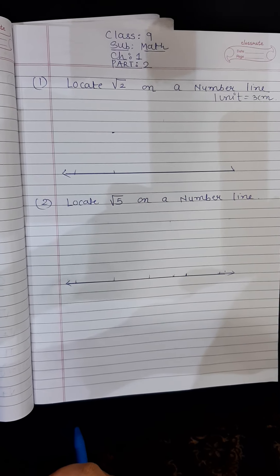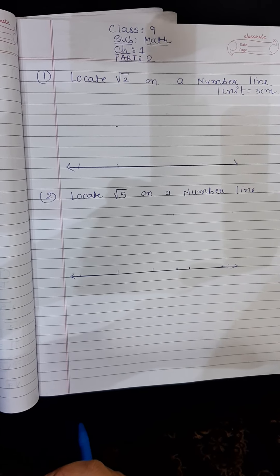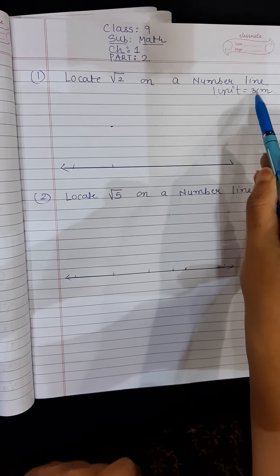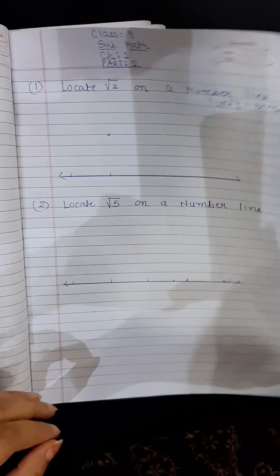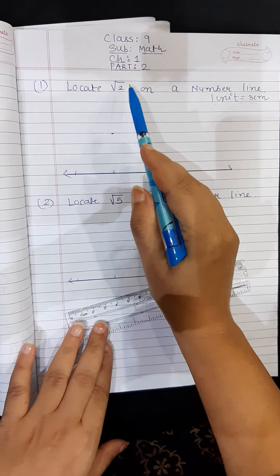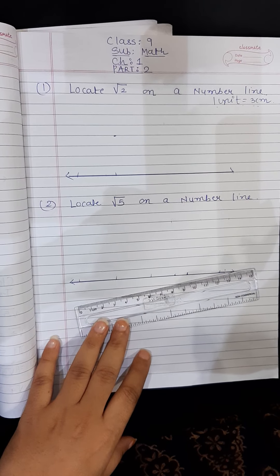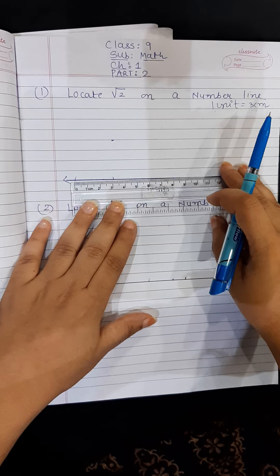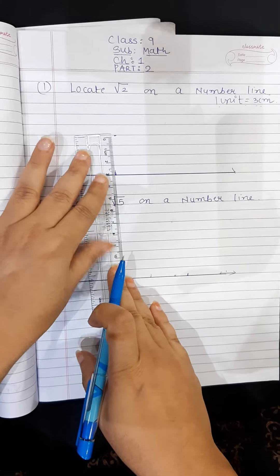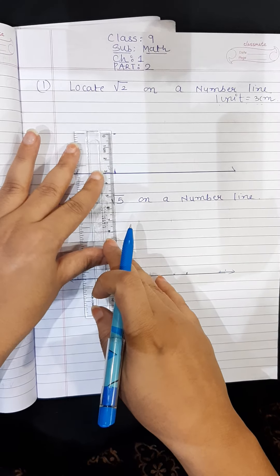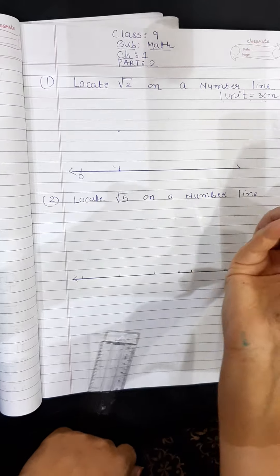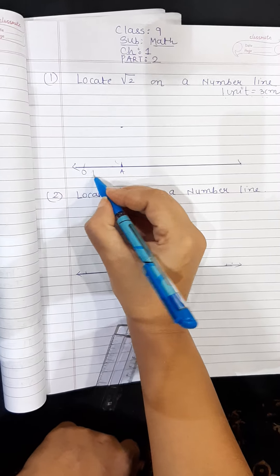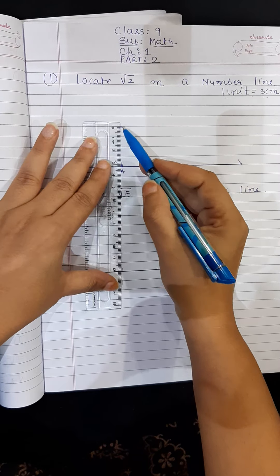Now the question is locate root 2, which is an irrational number, on the number line. So what I have done is I have simply drawn one number line and here you might have observed that I have written 1 unit equals 3 centimeter. So what you have to do is use 3 centimeter. So I need to locate root 2. You have to remember that root 2 will be made up of 1 unit plus 1 unit. So here 3 centimeter I have taken as 1 unit and the height also of 1 unit which is 3 centimeter. So this is my original point or the initiation point O. This is A. Now this is 3 centimeter but you will call this as 1 unit. I will simply join this 1 unit with this.